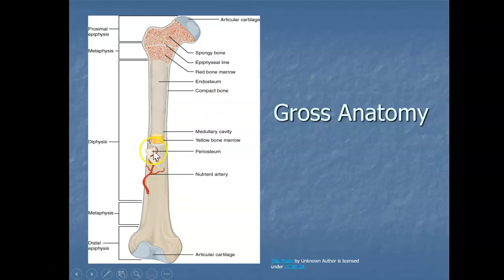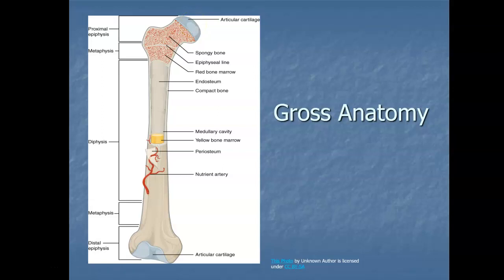The periosteum is also a place for tendons and ligaments to attach to the bones, allowing us to move. The periosteum covers the entire bone except for the very ends of the epiphyses, which are covered with articular cartilage — a thin layer of cartilage whose job is to help reduce friction when your bones rub against other bones.